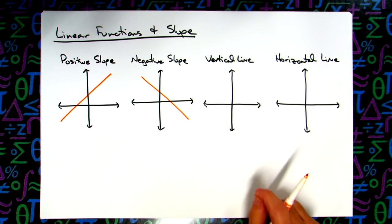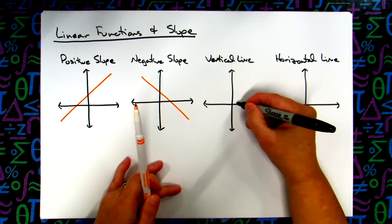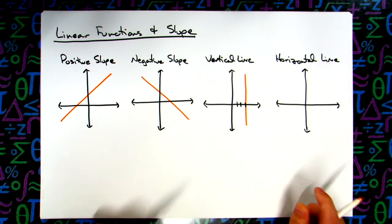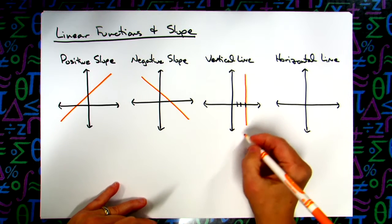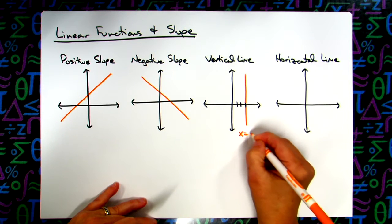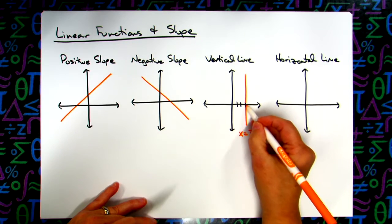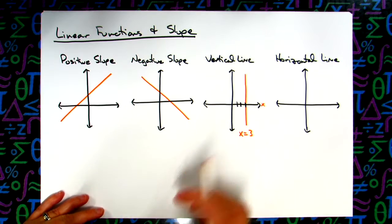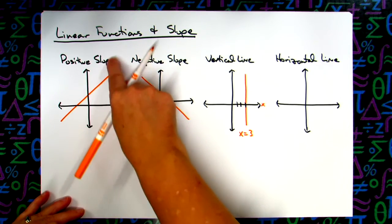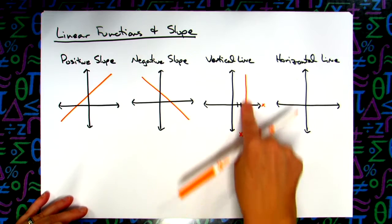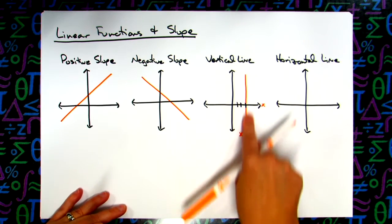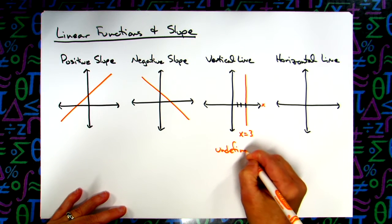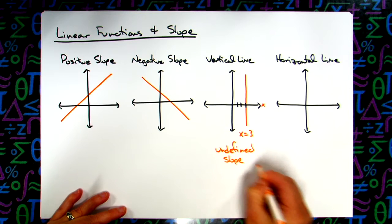Now for the vertical line — obviously that's an up and down line. Let's say this one goes through three. I would expect you to be able to write the equation of that. A vertical line is x equals three; it goes through three on the x-axis. If we're thinking of these as roads, this would be driving up a hill. We cannot drive up the side of a building, so that's why this slope is an undefined slope — it doesn't exist.